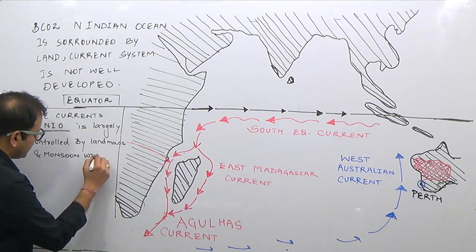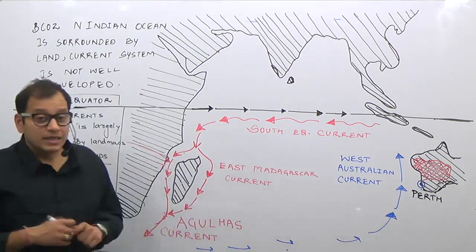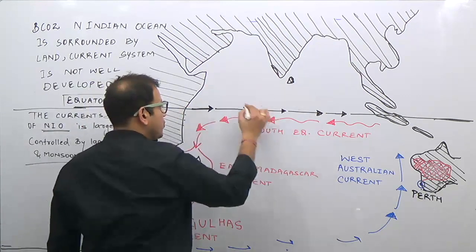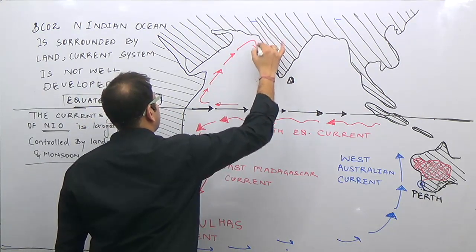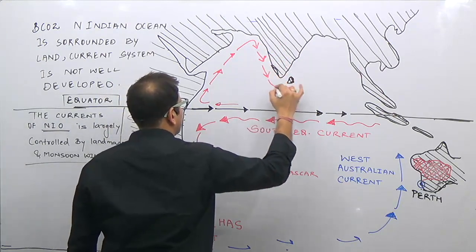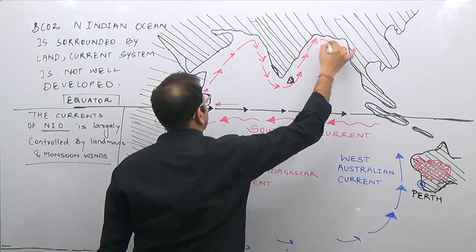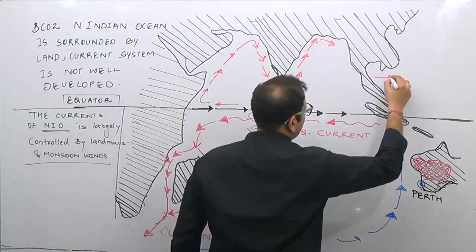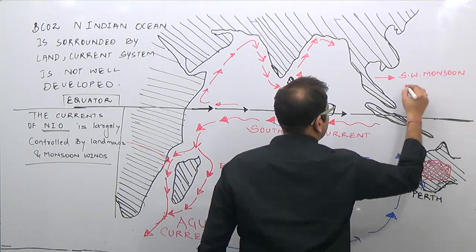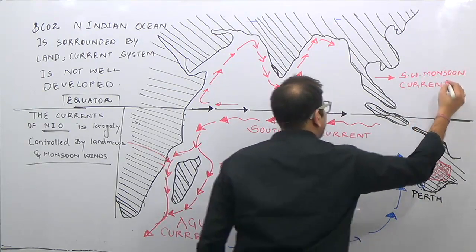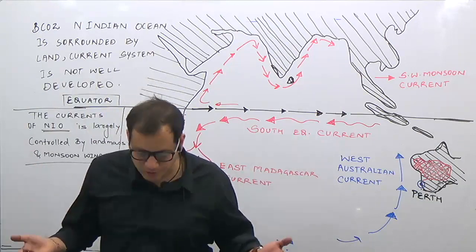Let us see how this effect is observed. In the summer season the winds blow as a southwest monsoon, so we have a Southwest Monsoon Current which comes towards India and flows as a Southwest Monsoon Current during the season of southwest monsoon, that is during summer. This is a warm current because it develops during the summer season along with the southwest monsoon.